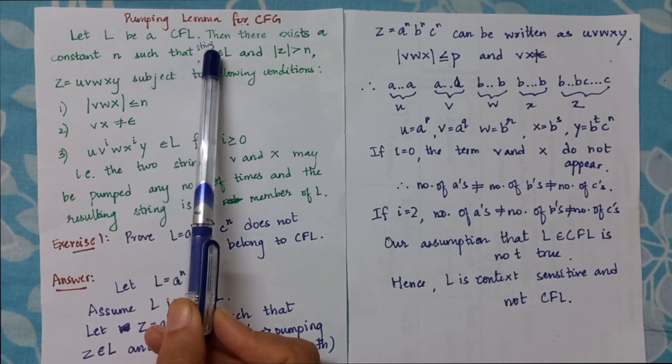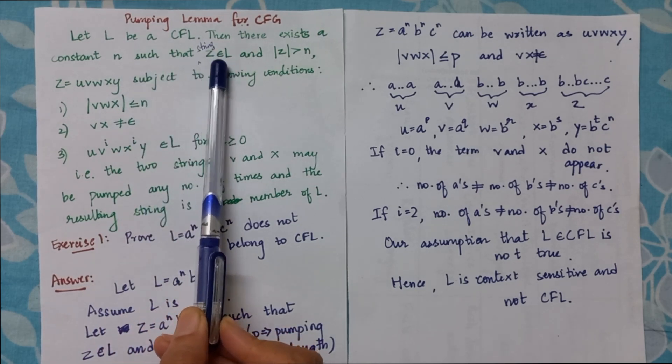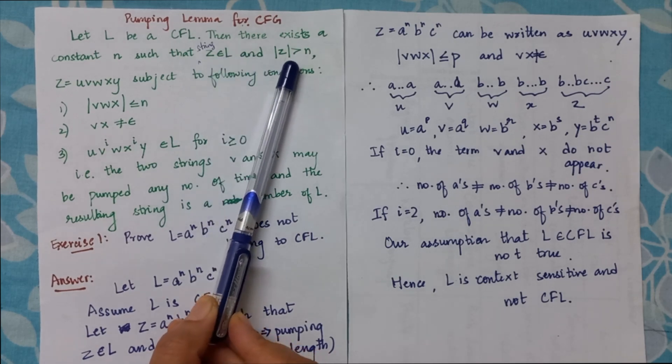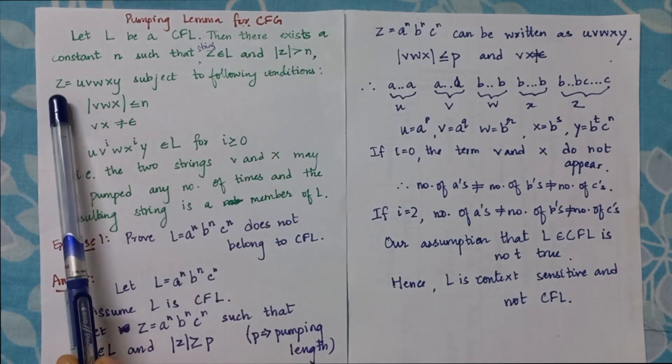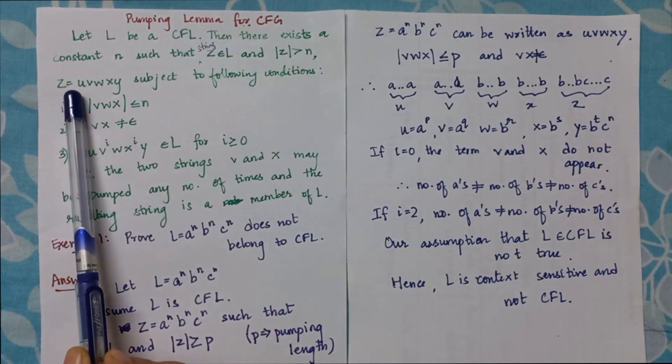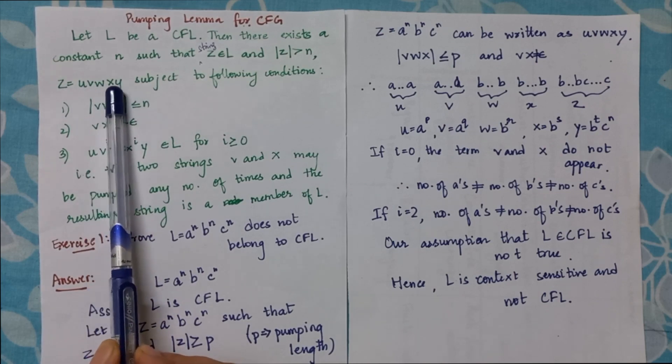Such that I have a particular string z belonging to L, and the length of the string has to be more than n. I divide the string: z equals u v w x y. It gets divided into five parts.